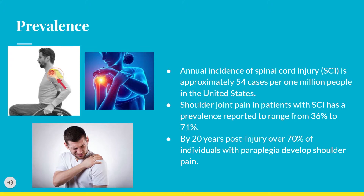Given the current U.S. population size of 329 million people, a recent estimate showed that the annual incidence of spinal cord injury is approximately 54 cases per 1 million people in the United States, or about 17,000 new cases each year. Shoulder joint pain is one of the most frequent secondary complaints following spinal cord injury, with prevalence reported to range from 36% to 71%. Studies have shown that by 20 years post-injury, over 70% of individuals with paraplegia develop shoulder pain.